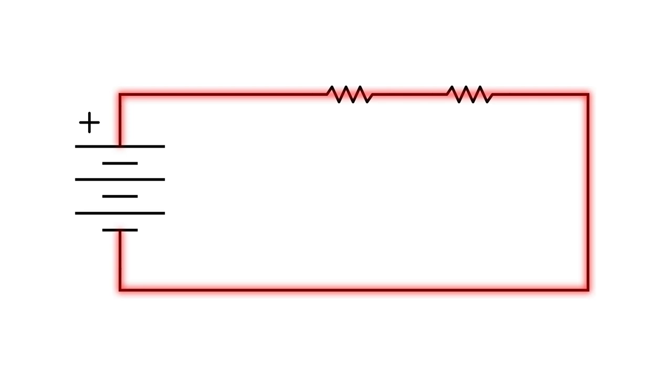What's really interesting about this configuration is what happens with the voltage. A voltage drop develops across each resistor. This voltage drop is proportionate to the current and the resistance. So if you think that through, what that means is that there can be different voltages across those resistors.